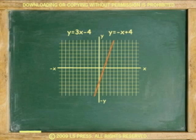Next, plot the second equation where the y-intercept is 0, 4 and the slope is negative 1. In the graph, the lines cross at 2, 2. This point is the solution to the system represented by the two equations given.